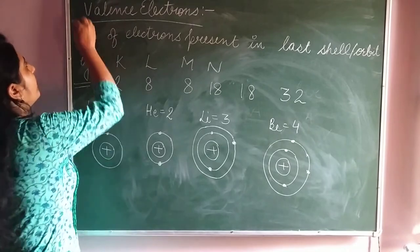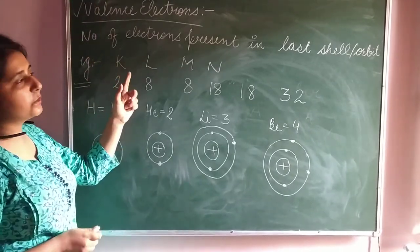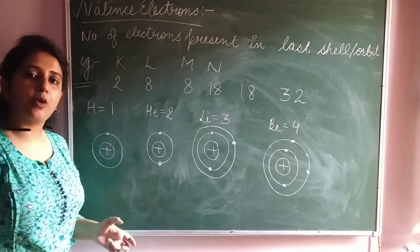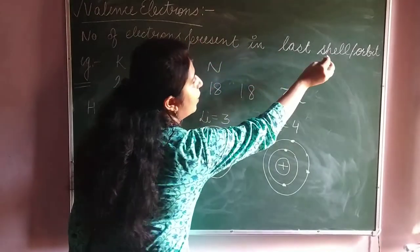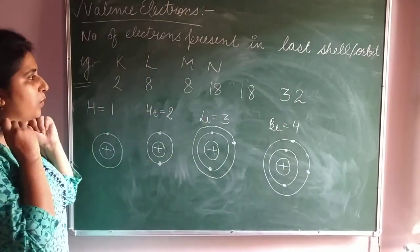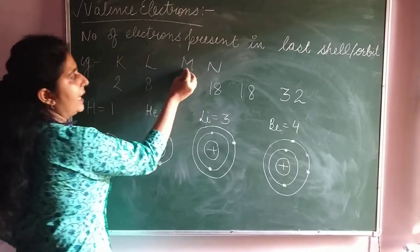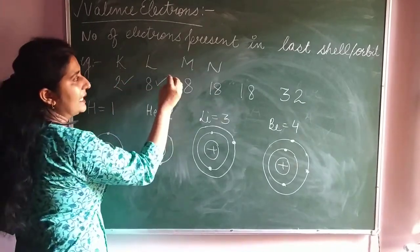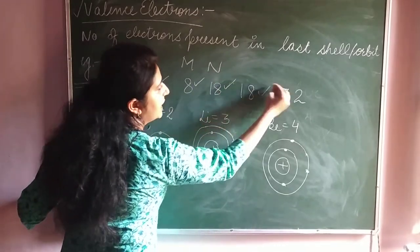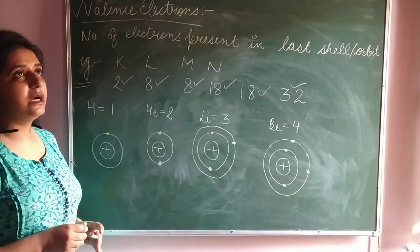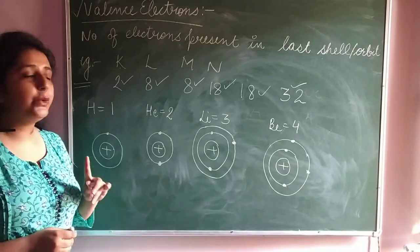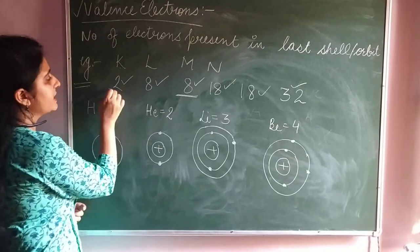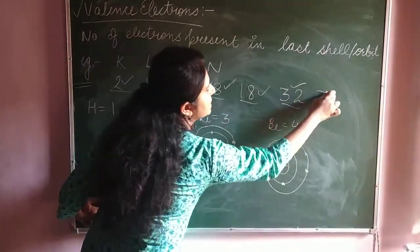Now we are discussing the topic of valence electrons. Valence electrons are the number of electrons present in the last shell or last orbit of the atom. Our shells are K, L, M, and N. By the 2n² rule: the K shell can contain 2 electrons, L shell 8, M shell 18, and N shell 32. When filling electrons, we consider the sequence 2, 8, 8, 18, 18, 32, and 32.